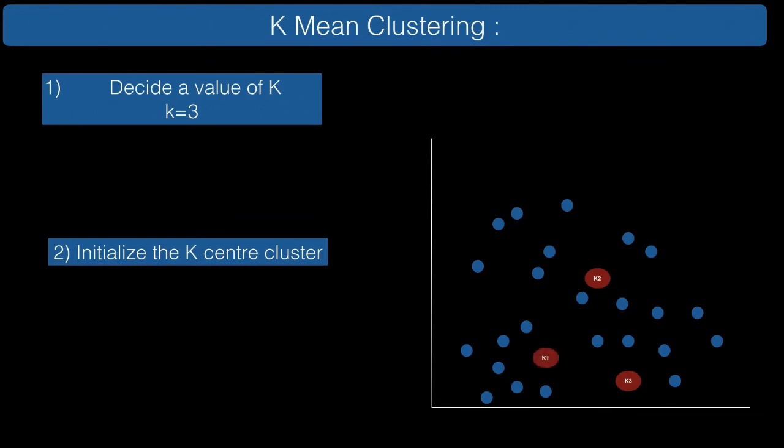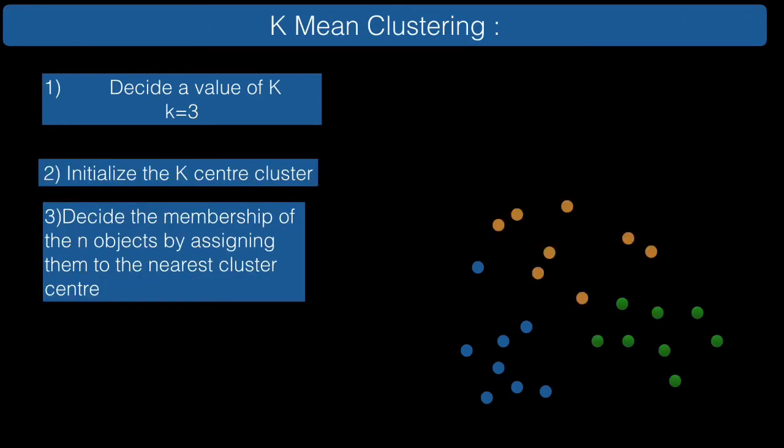Now the third step will be to assign the membership of these objects to the clusters. In the beginning, the objects will be assigned randomly or to the nearest k clusters. The first iteration will not be the most accurate one, neither will be the second one.